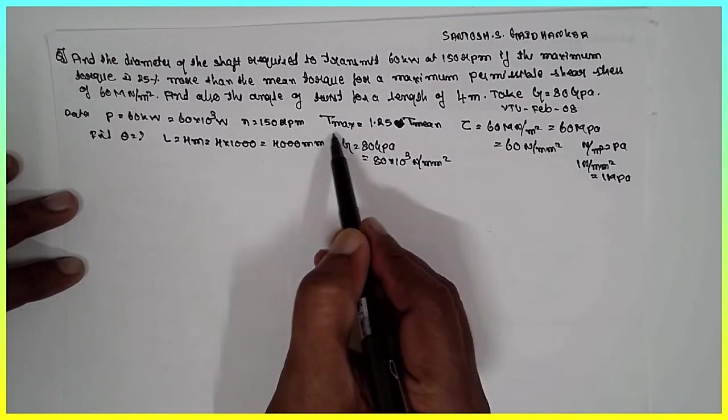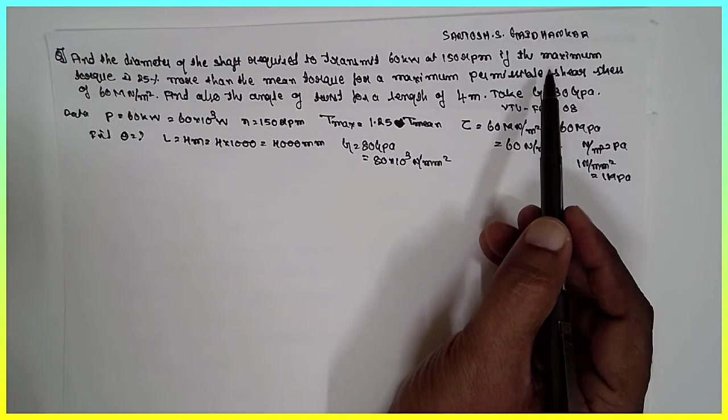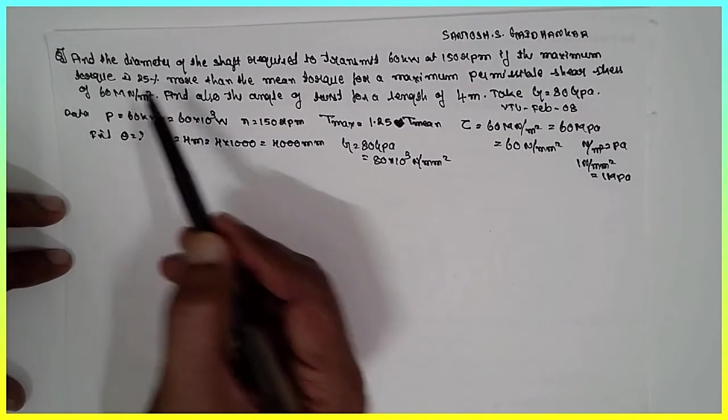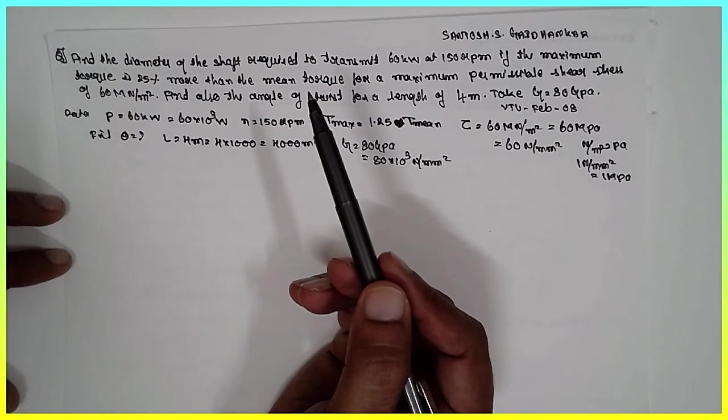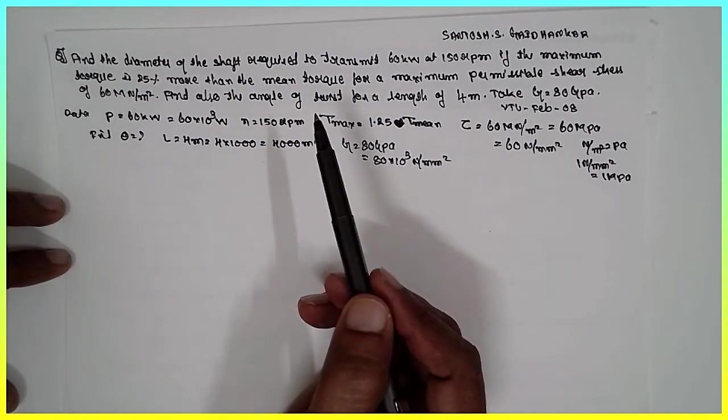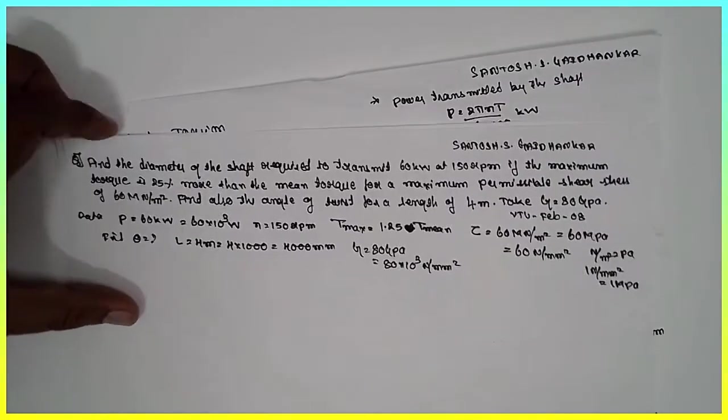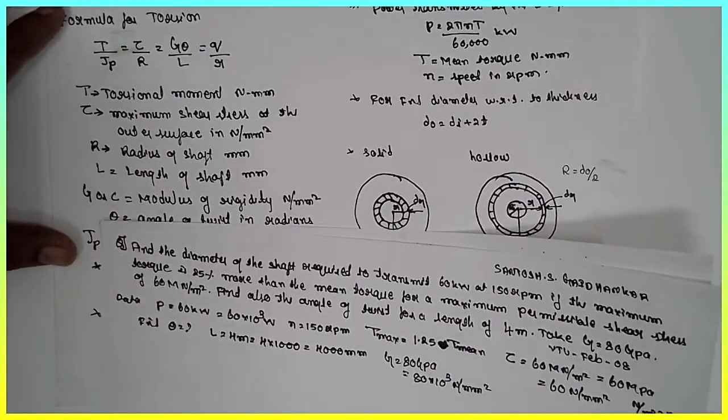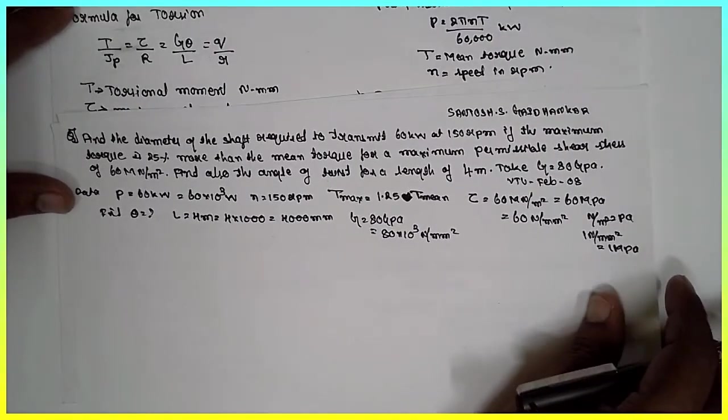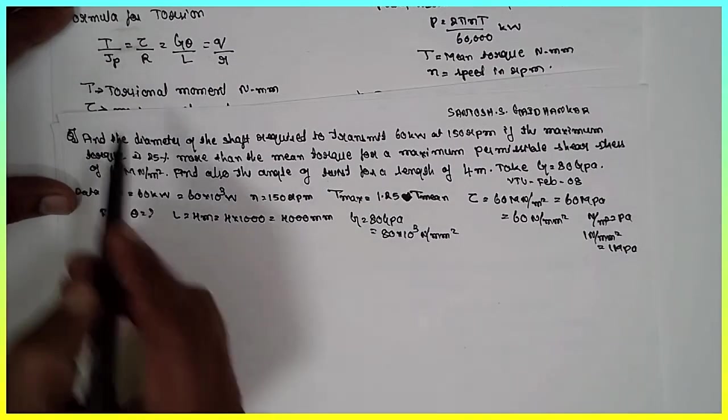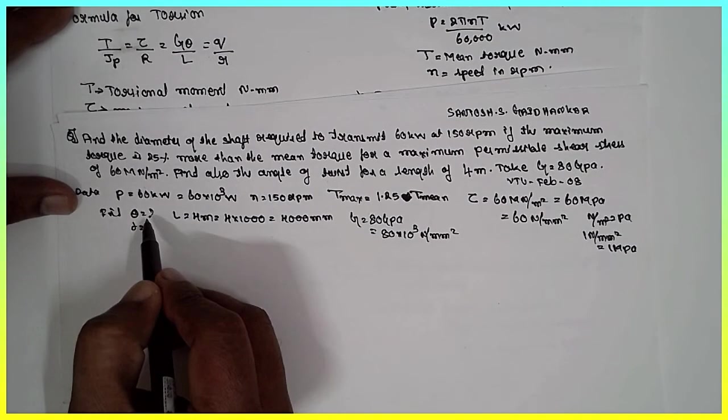In this problem, this is very important here. Because in most of the problems, the maximum torque is given. It may be 30% more than the mean torque. Then you have to take 1.30, 15% would be 1.15 times mean. Now, this is the formula list. We have to find out the diameter here, diameter and angle of twist.